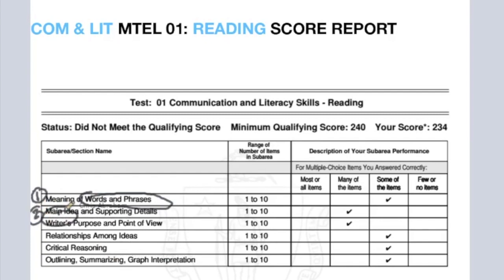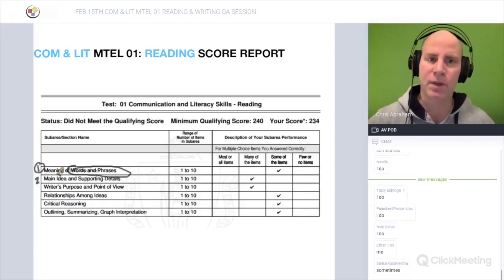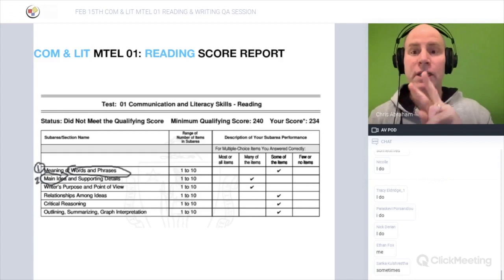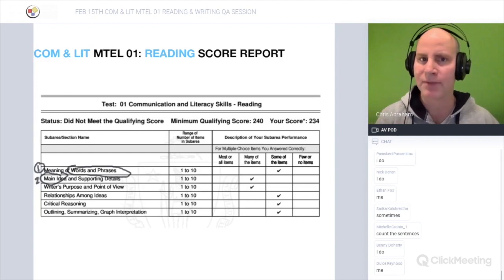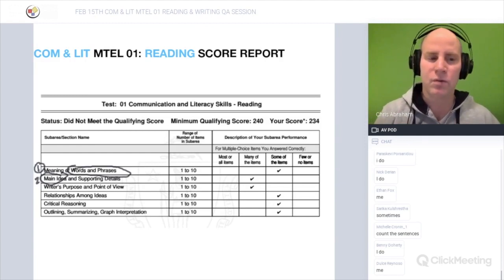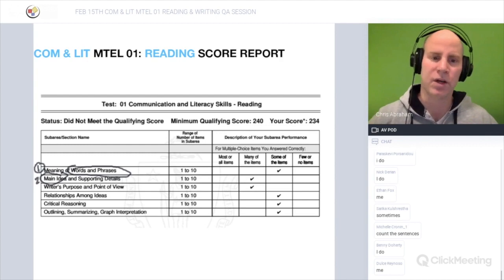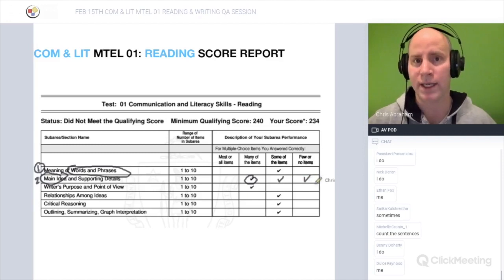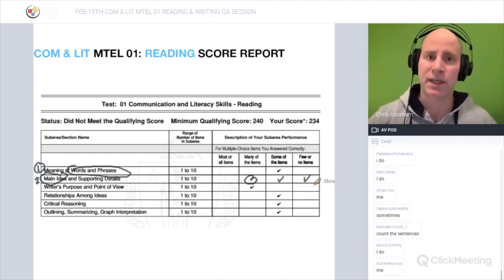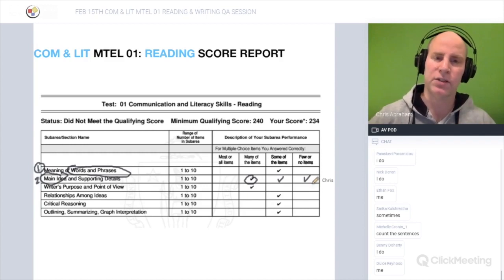Number two is main idea — I'll circle that right there. A lot of teachers read too much into main idea, and so they miss it because they get too focused. Remember with main idea questions that usually two of the answer choices are just too specific — the idea was only mentioned in one paragraph. If you're getting a two or one in this section, it could mean you're over-reading the questions.